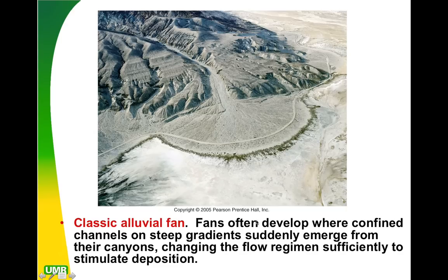At the end of a river we're going to see something called a fan in many cases. This is what we would see, let's say, at the mouth of the Mississippi and the Gulf of Mexico. This is developed when channels that are initially confined reach a point where they get to a different slope, a different flow regime, and that suddenly causes particles to want to be deposited into this fan-like pattern.